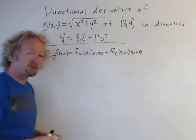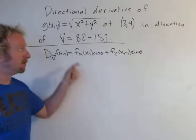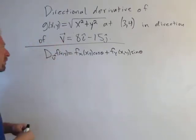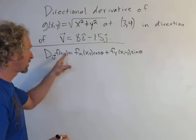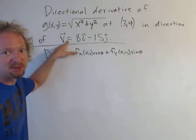So the first thing we have to do in this problem is come up with a unit vector in the direction of v because v is not a unit vector. To come up with a unit vector in the direction of v we're going to divide by the magnitude of v.